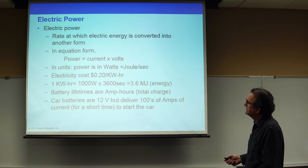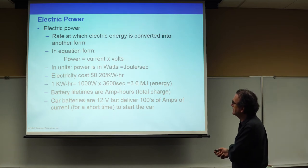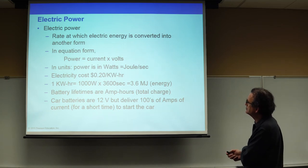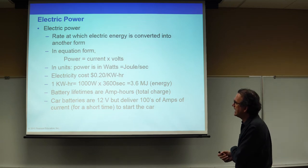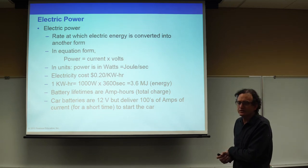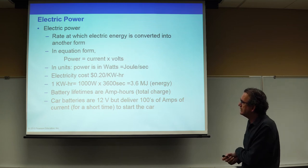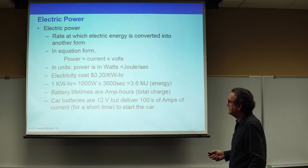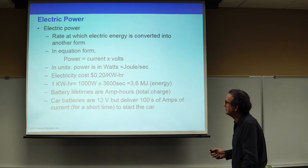If you look at your electricity bill and find that you're paying $100 a month, then what this tells you is that you are using about 500 kilowatt hours every month in the home. That's the total number of kilowatt hours.